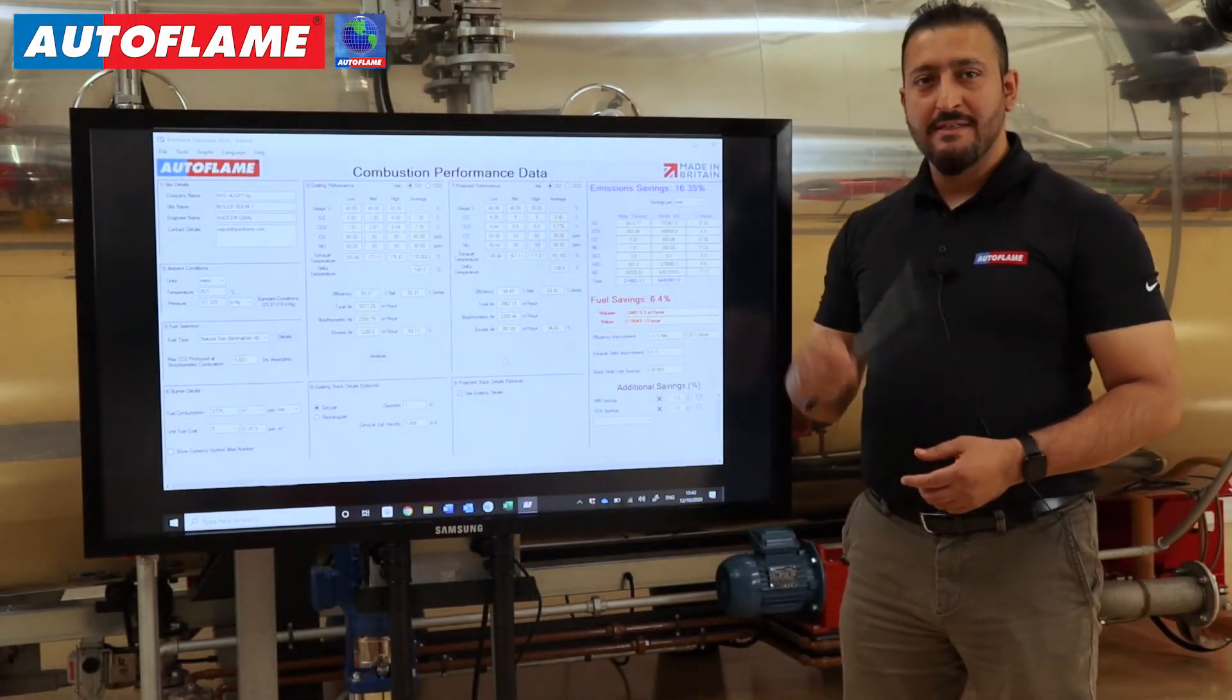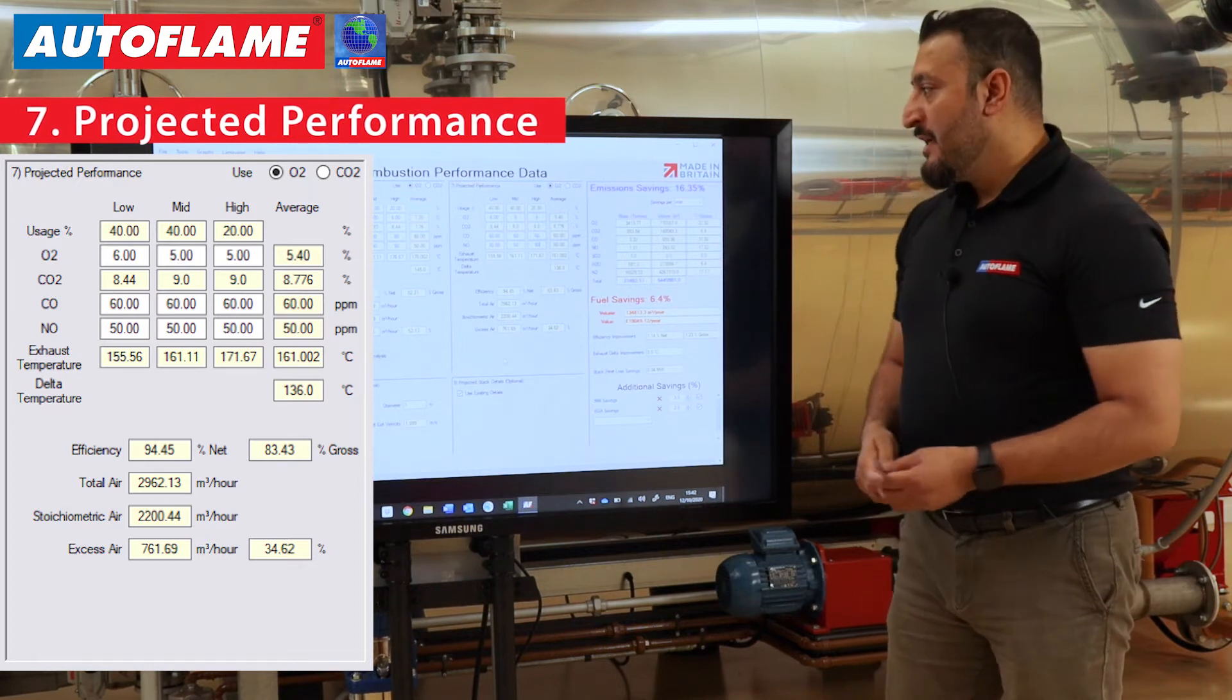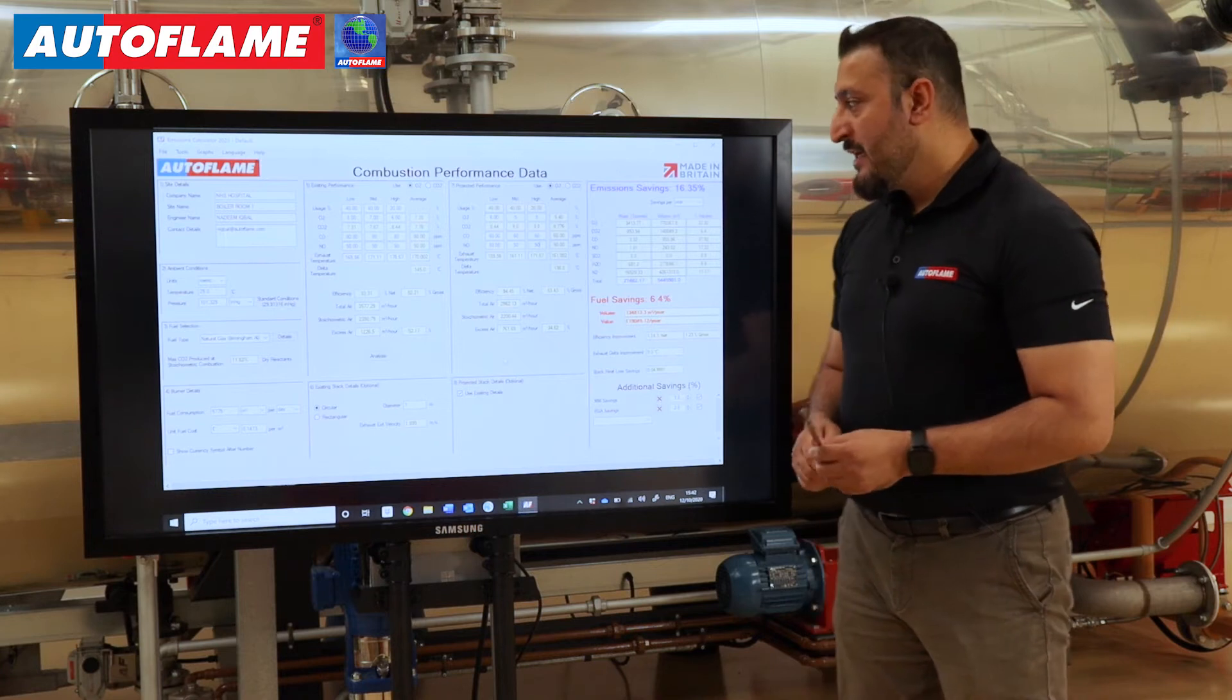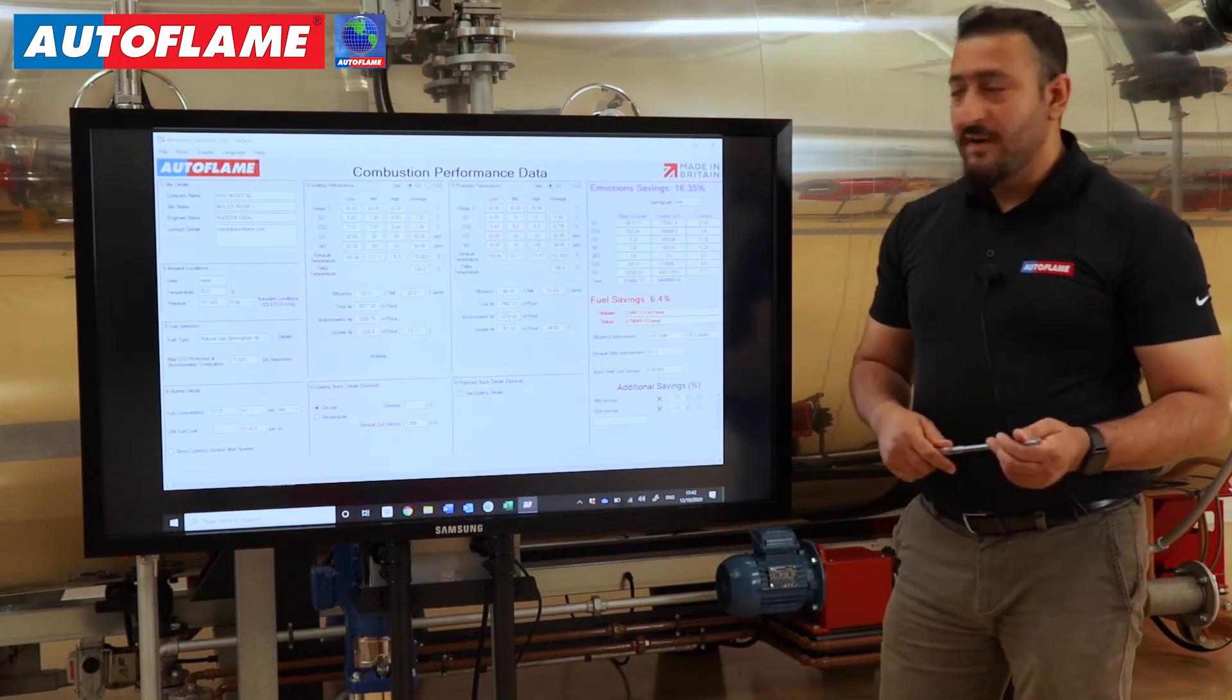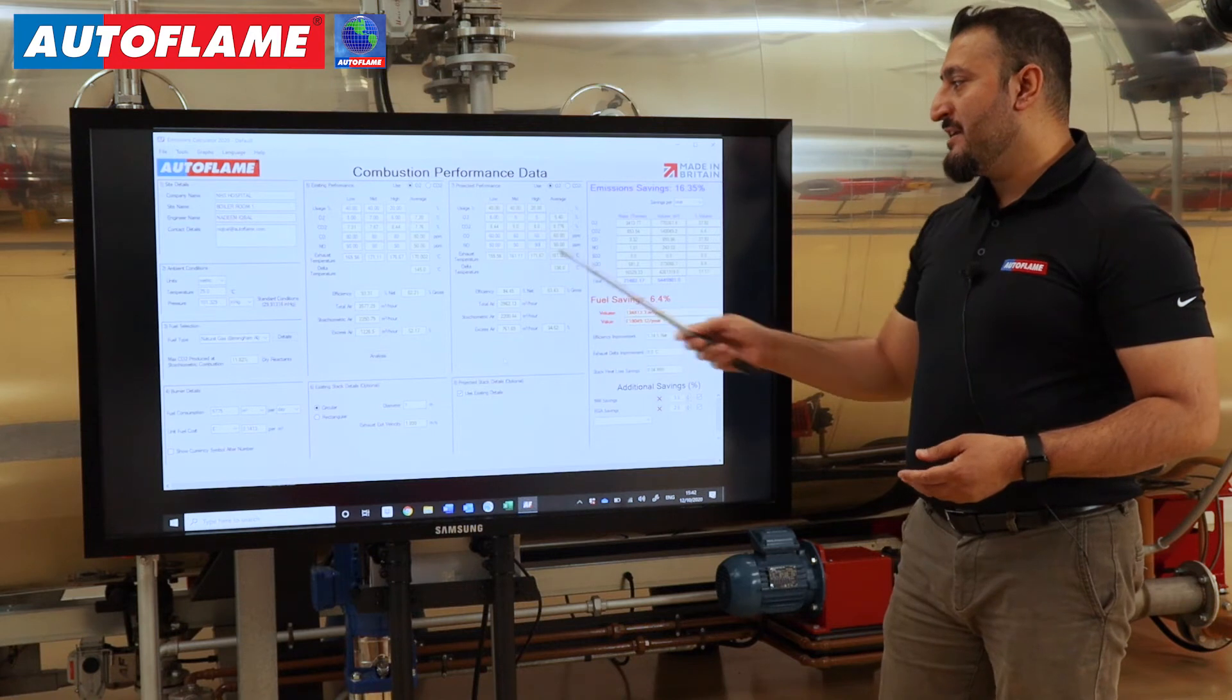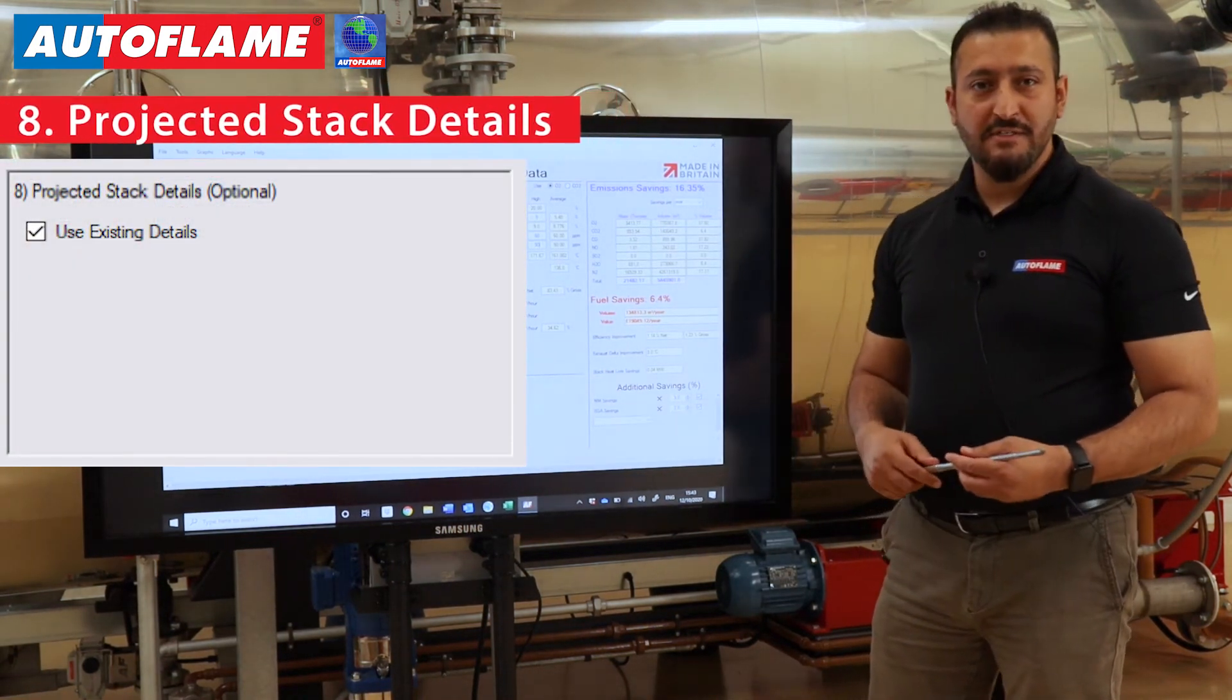Now we need to put the data into the projected performance. This will be based on if you are simply doing a controls upgrade or if you're actually changing a complete new burner. Based on our experience from previous case studies and projects we've carried out, we can roughly estimate how we can optimize a particular burner. In this particular case, we are using the readings as 6% O2 at low fire, mid fire and high fire is 5%, with CO reduction from 60 to 80 ppm. Your exhaust temperatures are being calculated as how much of a change this will make into the savings.